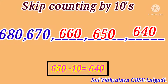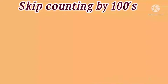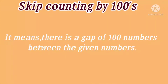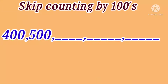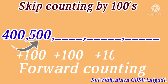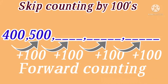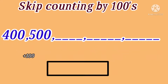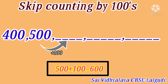Next, skip counting by hundreds means there is a gap of 100 numbers between the given numbers. For example: 400, 500. Here the numbers are given in forward counting order, so we should add number 100 repeatedly to get the next number. 400 plus 100 is equal to 500. 500 plus 100 is equal to